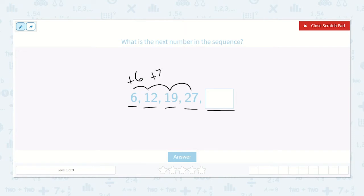Now let's see, from 19 to 27, so 19 to 20 is just 1 and then 7 more, so that is 1 plus 7, which is 8. So we have plus 6 plus 7 plus 8, what's your guess? So what are we going to add? Yeah, plus 9. So 9 more than 27 is 36, so our answer is 36.